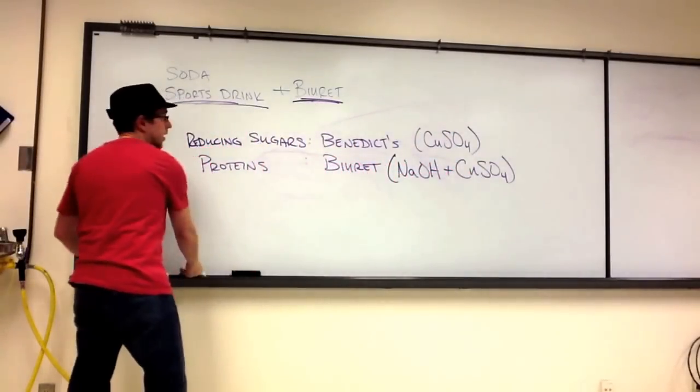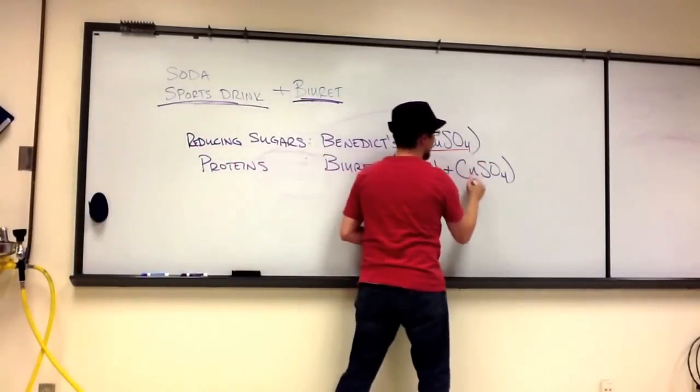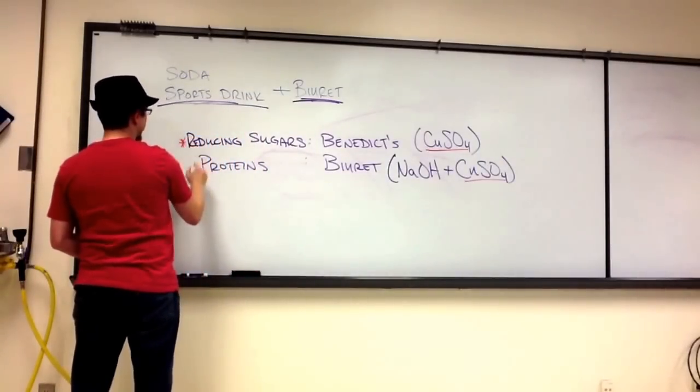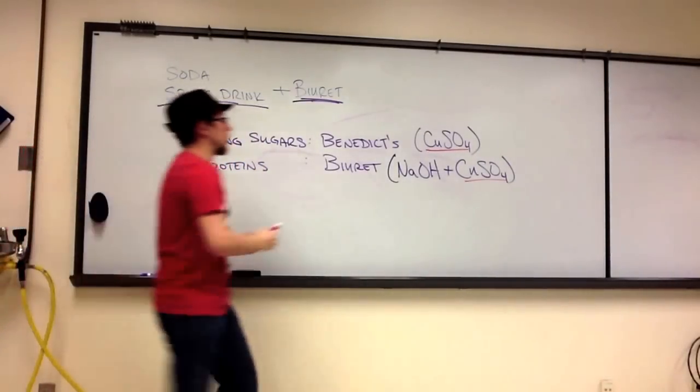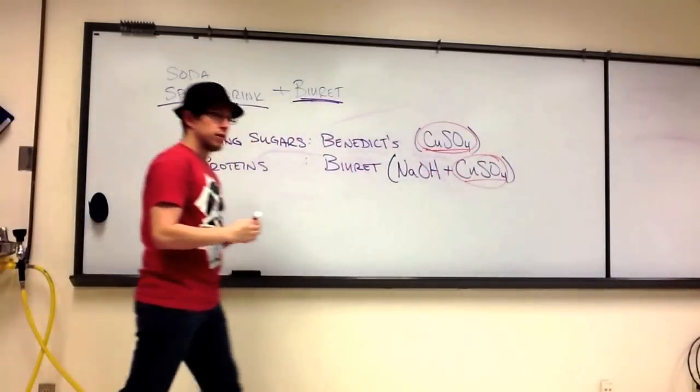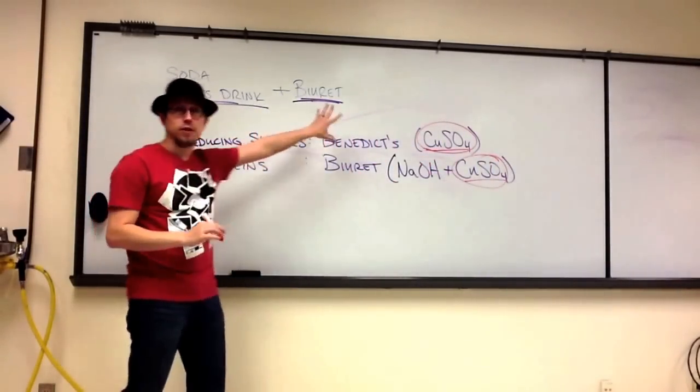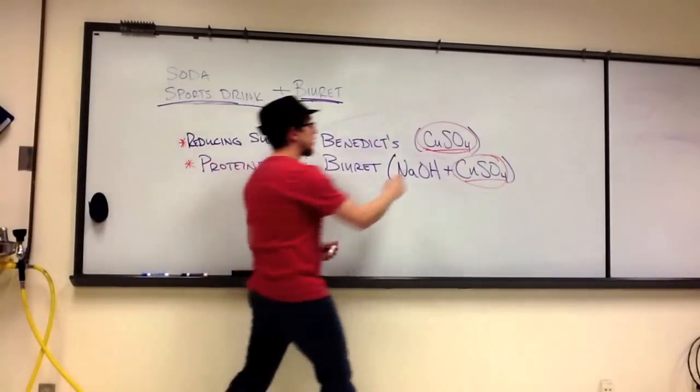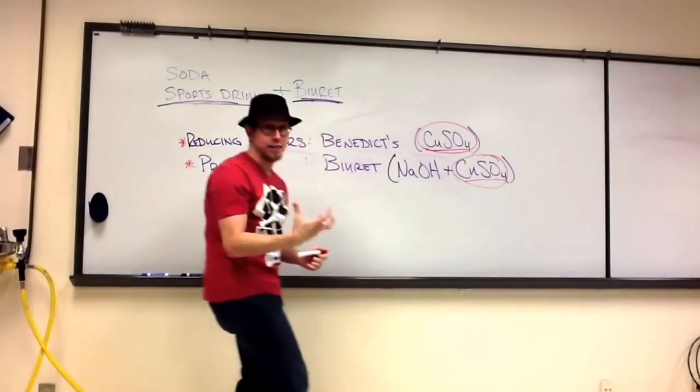Biuret is composed of sodium hydroxide and copper sulfate. So, yet again, we have another link. We have a common ingredient between the Benedict's and the Biuret. So, we have this copper sulfate. This is the first link we've developed now. The color is turning brown potentially because this copper sulfate is reacting with something.